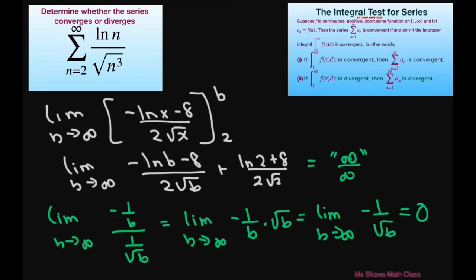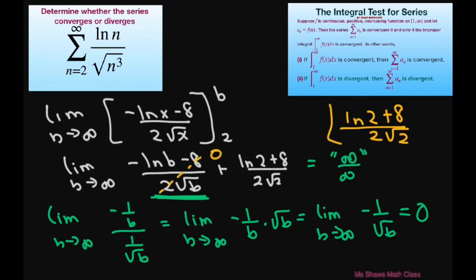So this equals 0. Therefore our integral converges to ln of 2 plus 8, divided by 2 square root of 2, because the limit part equals 0. And the series converges by the integral test.